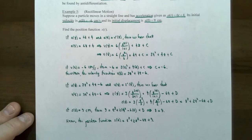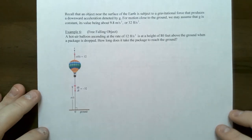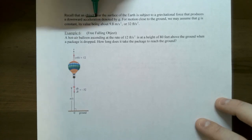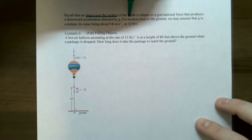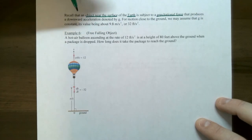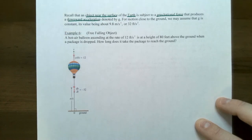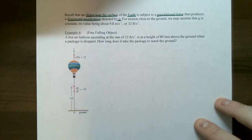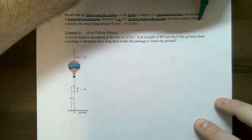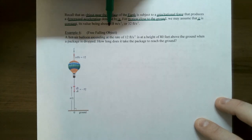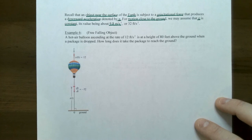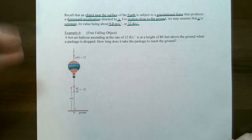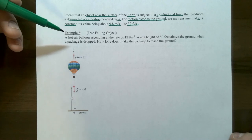Another type of second order differential equation comes from noting that the acceleration due to gravity for an object near the surface of the earth is constant. This gravitational force produces a downward acceleration, so it's negative, denoted with lowercase g. If the motion is close to the ground, we assume g is a constant: 9.8 meters per second squared in metric units, or 32 feet per second squared in English units.